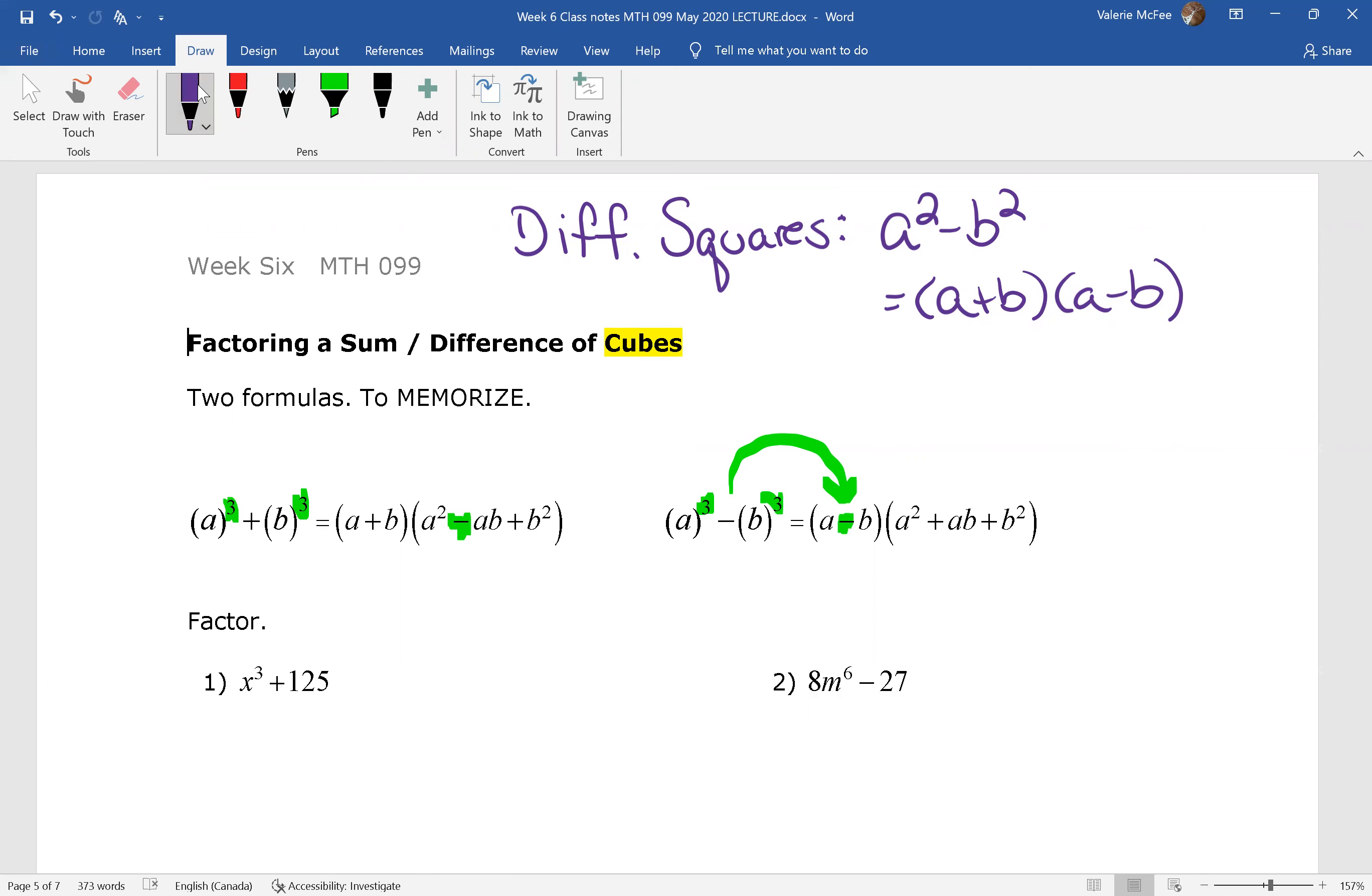Now one thing to point out is that this is a prime polynomial. If this could be factored, the formula would tell us how. Since this is where the formula stops, we can't factor that trinomial any further.